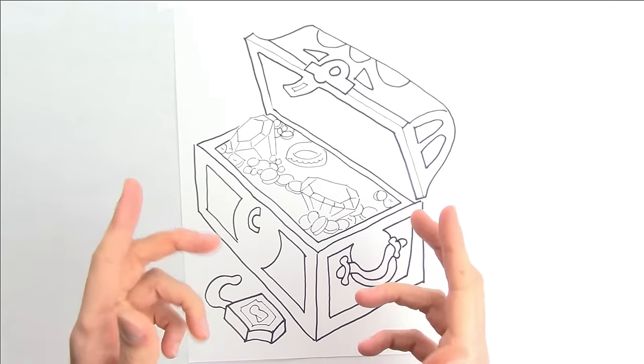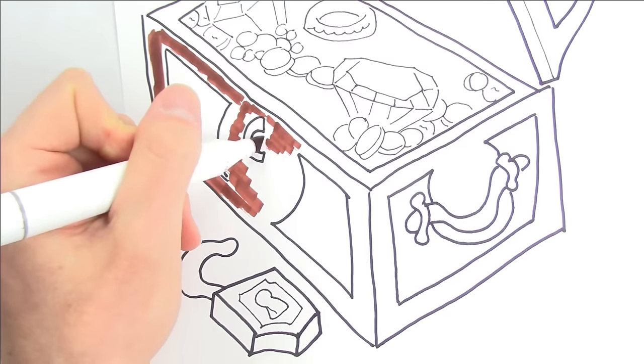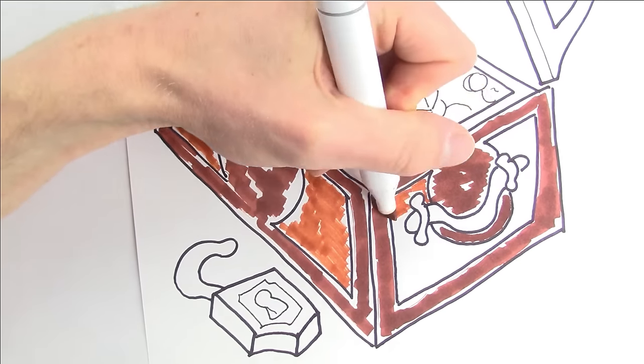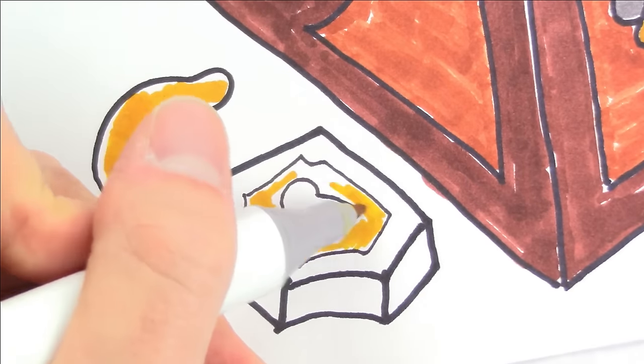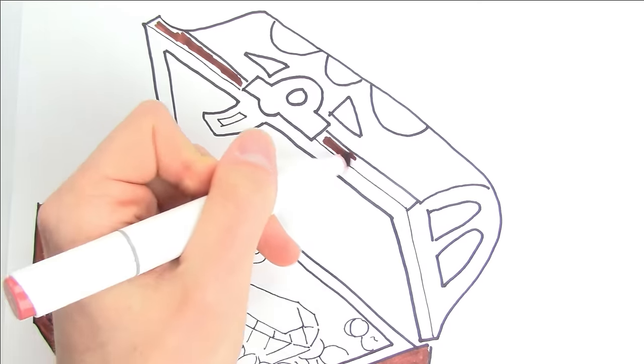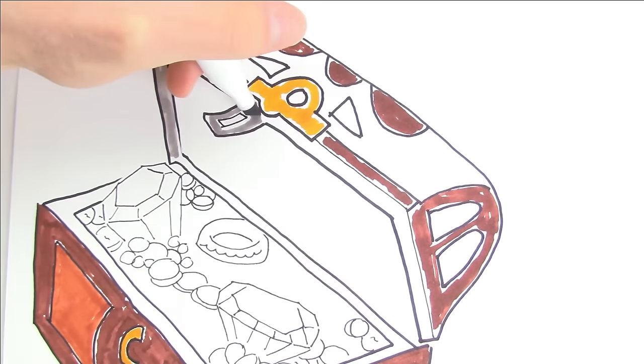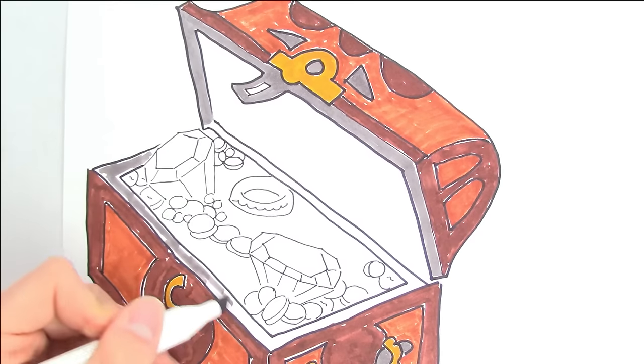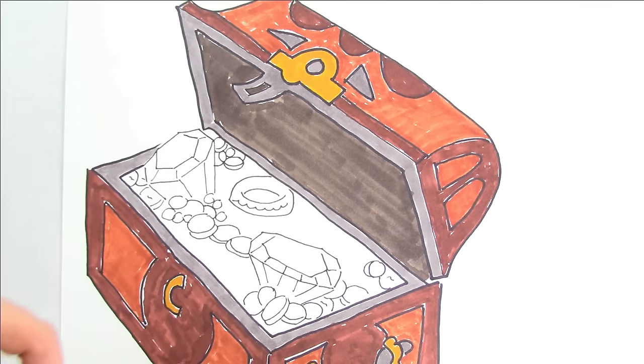Since this is a wooden chest, let's color it brown with a little bit of gray and gold color for the metal pieces. For the gems, one will be purple and the other will be aqua, gold for the coins, and the rest will be pink.